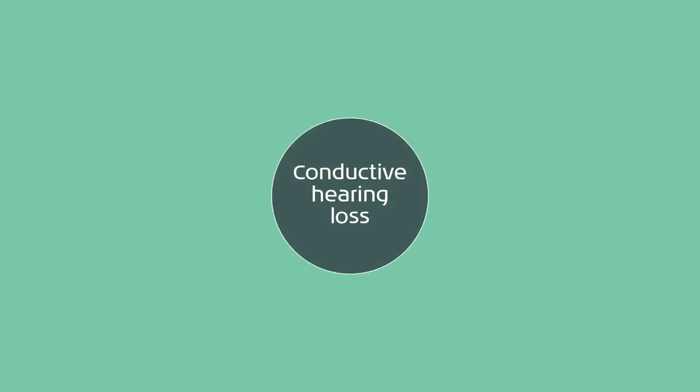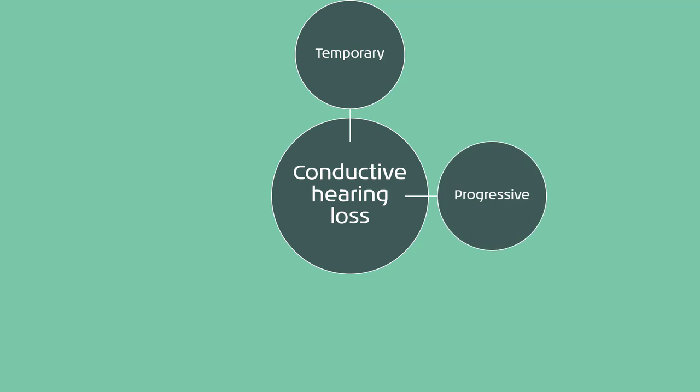As we are starting to see, conductive hearing loss can take many forms and presentations, and have a range of different causes and origins. A conductive hearing loss could be temporary, or it could fluctuate. It could also be progressive. We see permanent conductive hearing losses, which can be the end result of a progressive condition, or a permanent conductive loss could be congenital and present from birth.